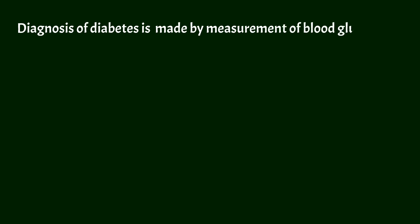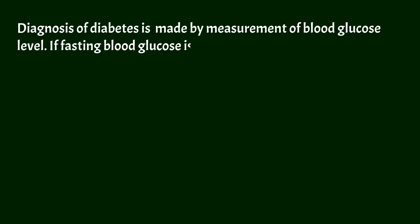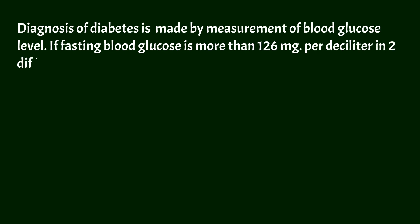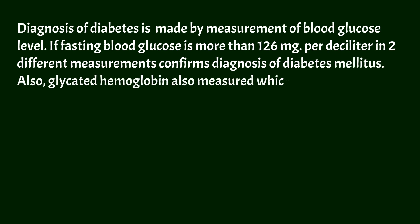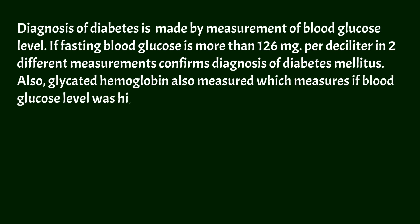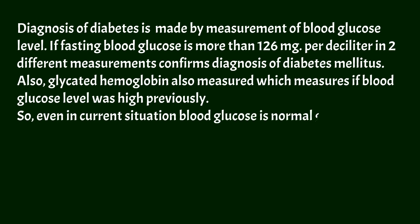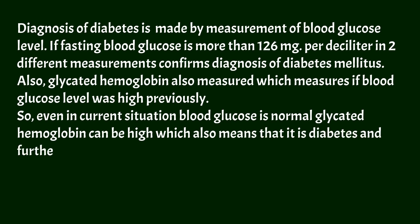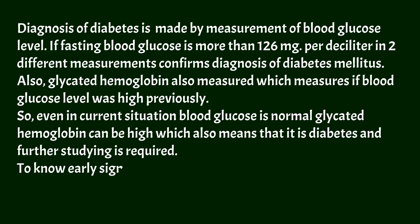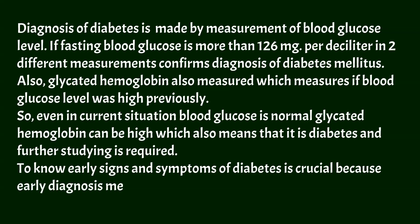Diagnosis of diabetes is made by measurement of blood glucose level. If fasting blood glucose is more than 126 mg per deciliter in two different measurements, it confirms the diagnosis of diabetes mellitus. Glycated hemoglobin is also measured, which indicates whether blood glucose levels were elevated previously. So even if current blood glucose is normal, high glycated hemoglobin can still indicate diabetes, and further investigation is required. Knowing the early signs and symptoms of diabetes is crucial, because early diagnosis means a better prognosis.